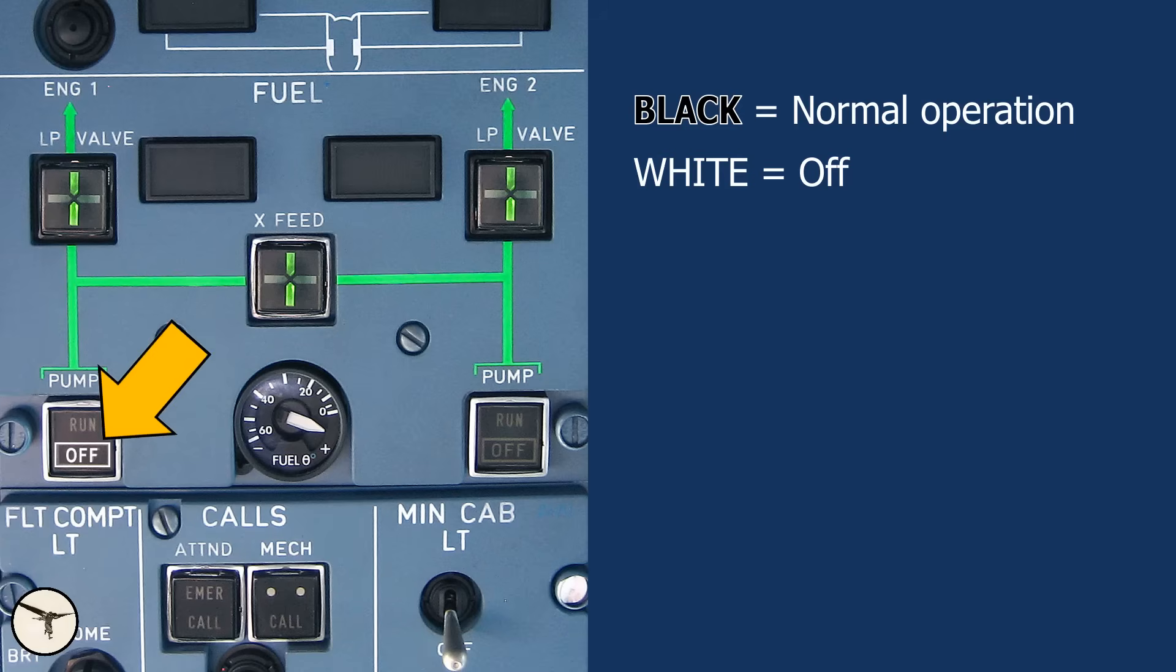White, the system is turned off. For instance, after shutting down the engines and before leaving the aircraft, we switch off certain systems like the fuel pumps and the windshield heating.